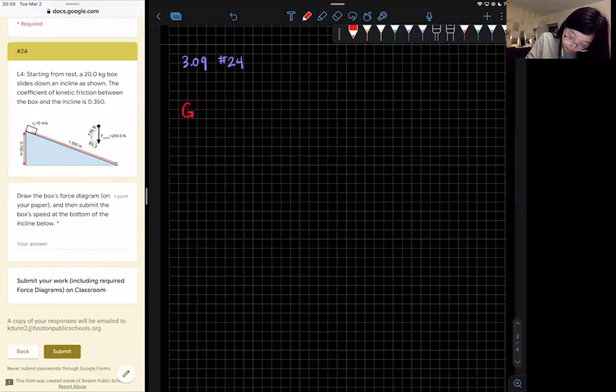So let me try to use a guide here. Mass is 20 kilograms. The mu k kinetic coefficient of friction is 0.350, and some dimensions of the ramp are given as well.